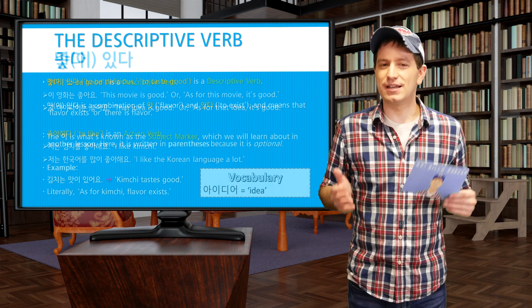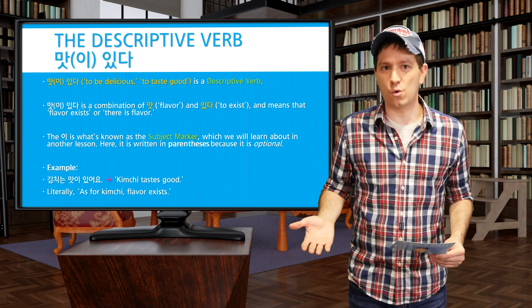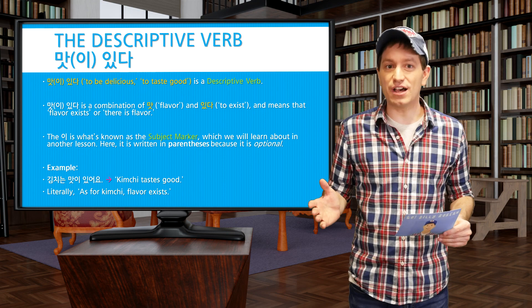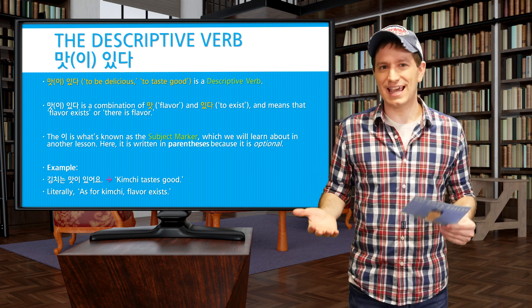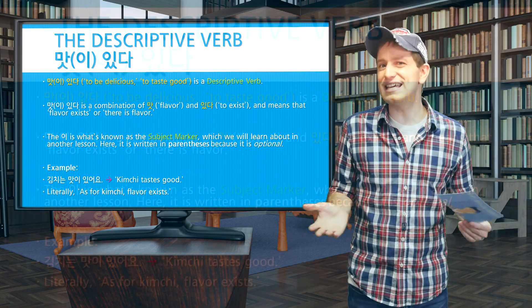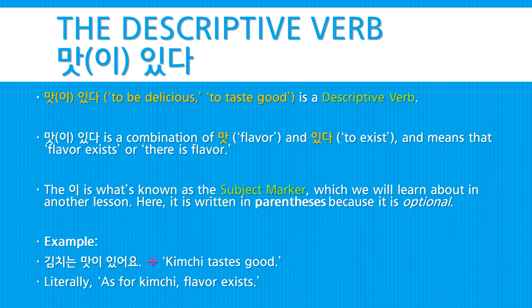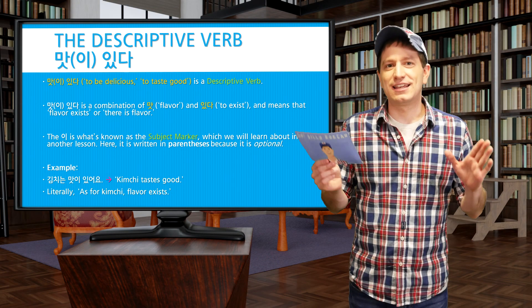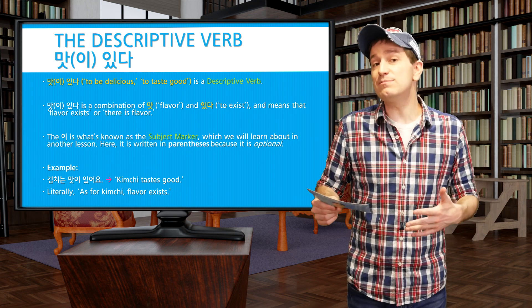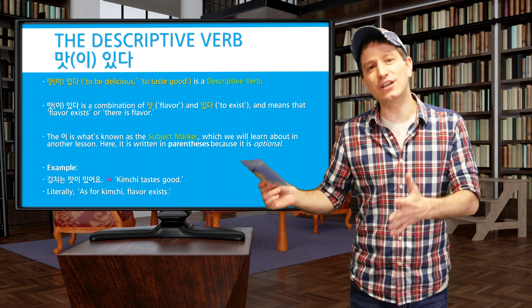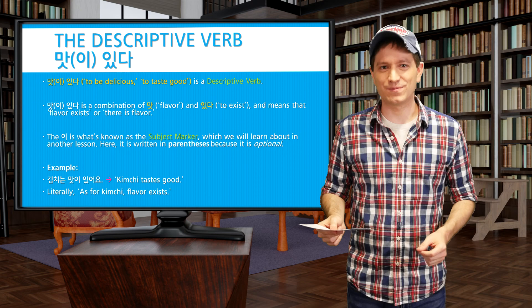Next, we have the descriptive verb 맛이 있다, which means to be delicious, or to taste good. This is a combination of the noun 맛, meaning flavor, and 있다, the descriptive verb meaning to exist — it literally means flavor exists, or there is flavor. The 이 here is the subject marker, which we'll learn about in another lesson; it's written in parentheses because it's optional. For example, 김치는 맛있어요 — 김치 is delicious, or 김치 tastes good. Literally, as for 김치, there exists flavor.